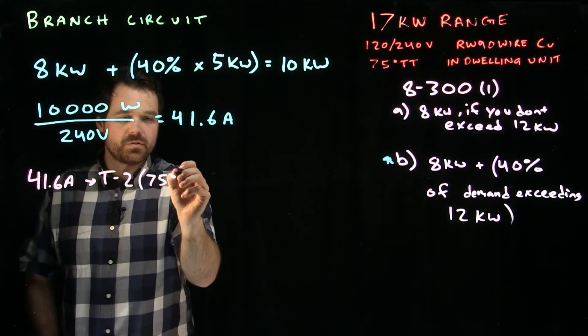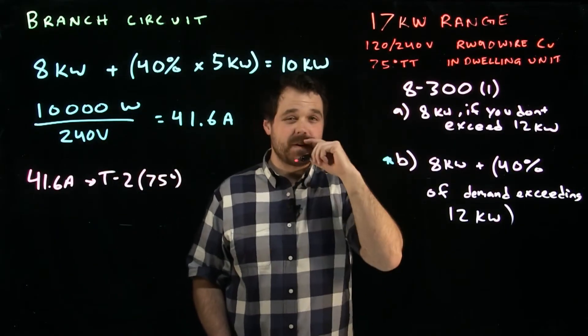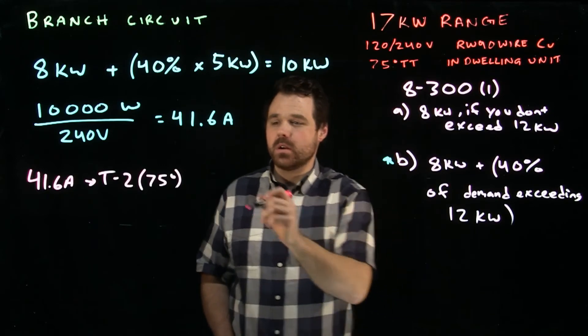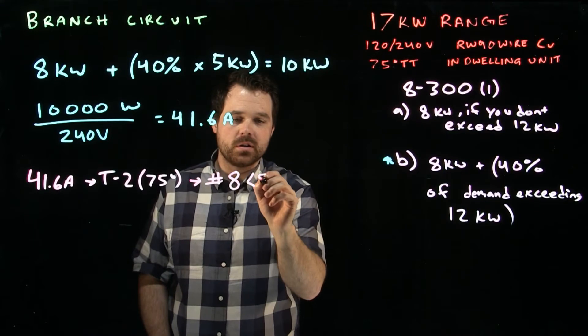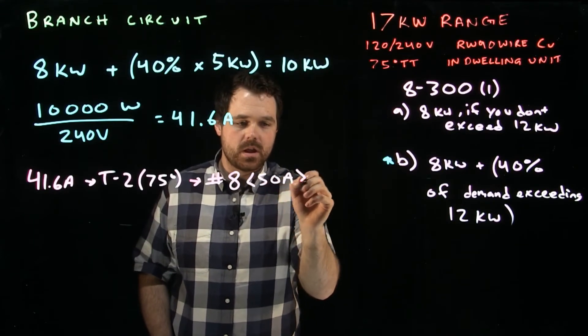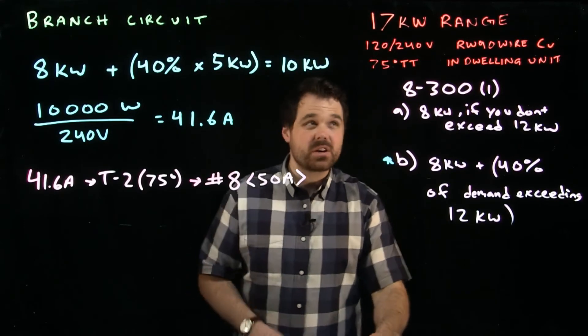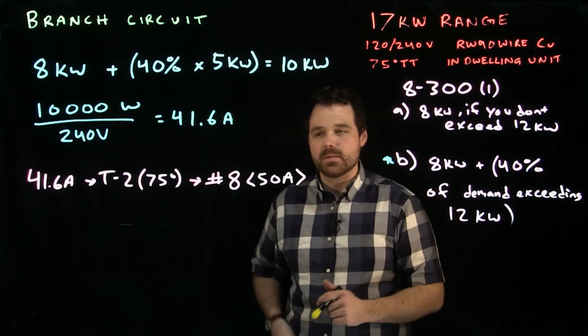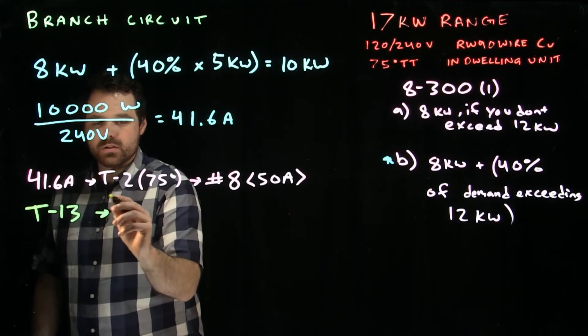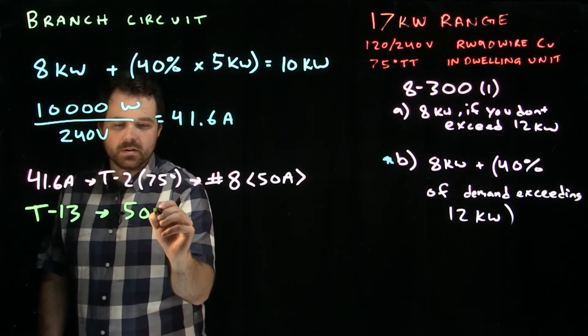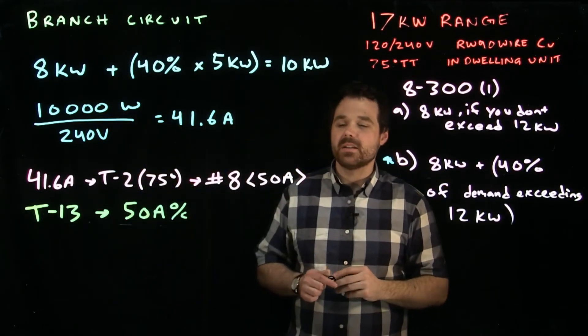In this case, we would use the 75 degree column. We're using the 75 degree column because of the 75 degree termination temperature. That gives us a number 8, which is good for 50 amps. Now that we have our conductor, that would be the size of our conductor is number 8.